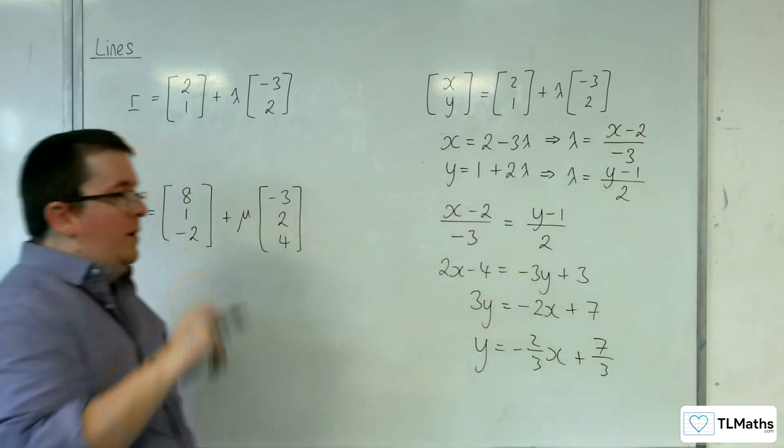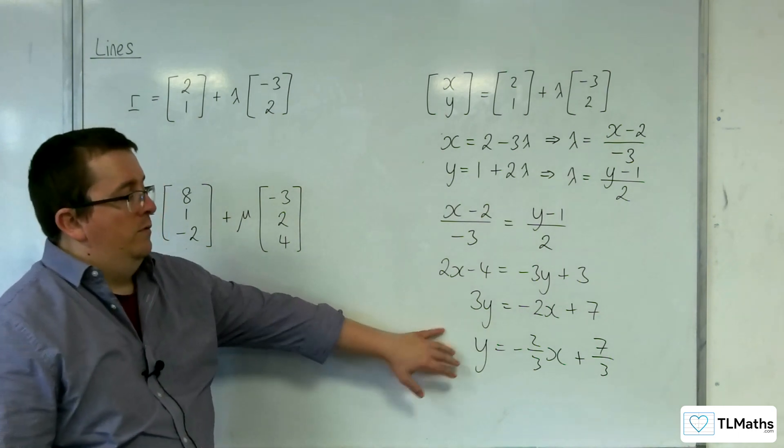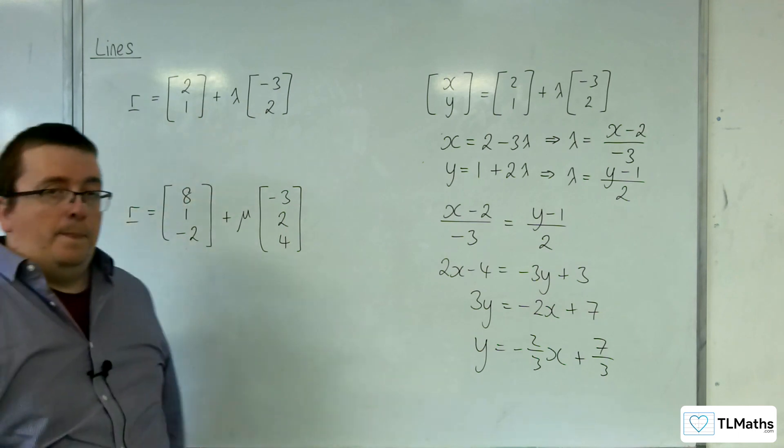Okay, so y is equal to minus 2 thirds x plus 7 thirds. And that would be the equation of the line that is equivalent to this line here.